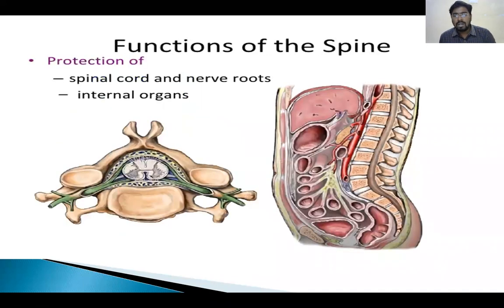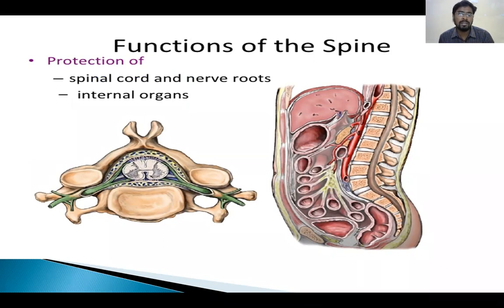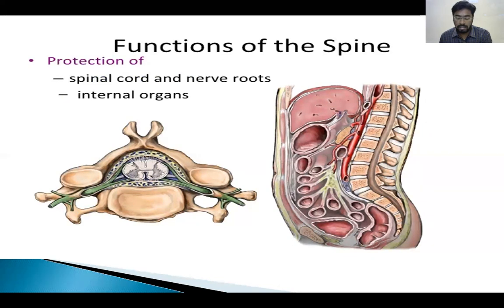Coming to the functions of the spine: the spine is responsible for keeping the body in correct posture. It helps maintain movements of the body like forward bending and rotation. It also protects the spinal cord and the traversing nerve roots, and protects the internal organs of the thorax and the abdomen.